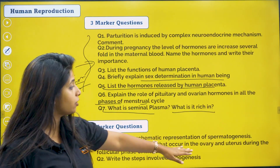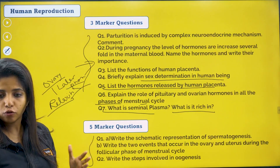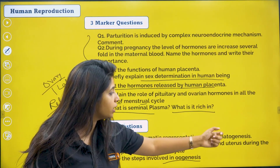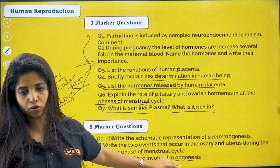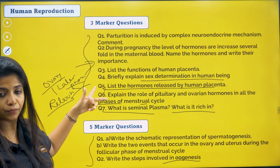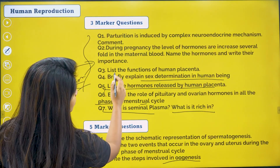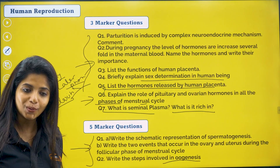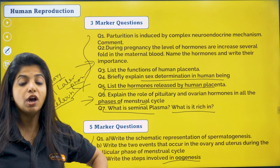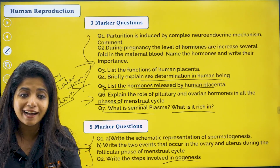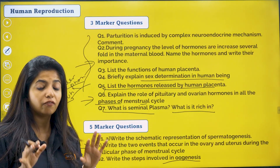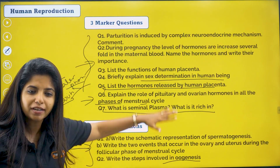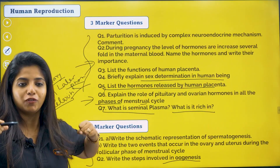Write the schematic representation of spermatogenesis. Similarly, you could be asked about oogenesis — steps involved in oogenesis. Write the two events that occur in the ovary and uterus during the follicular phase of the menstrual cycle. The same thing can be asked in different ways. The secondary oocyte formed during oogenesis — what is the new layer it produces? It is known as zona pellucida. Will zona pellucida still be there after fertilization? All these questions could come in, so you should study these general topics.